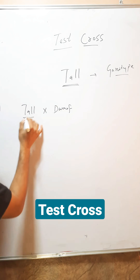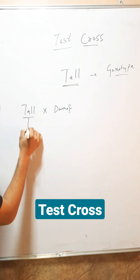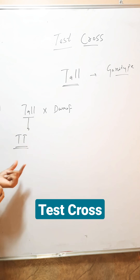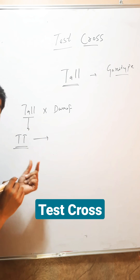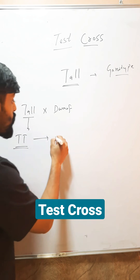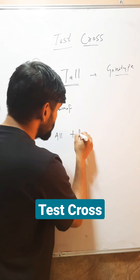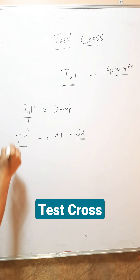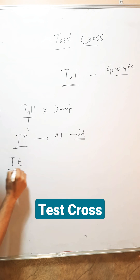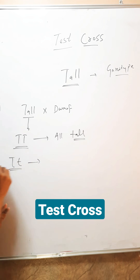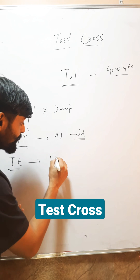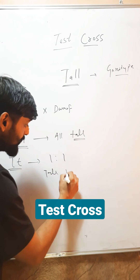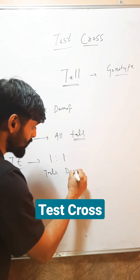So, if this tall is capital T capital T — homozygous tall — then I will get all tall. But if this is hybrid tall, then I will get a 1:1 ratio between tall and dwarf.